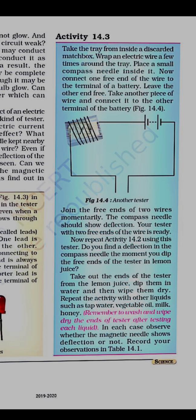The compass needle shows deflection, and your tester with two free ends of wire is ready. Now take out the ends of the wires — if you take out the tester's wire, do you find any deflection in the compass? Next, dip the tester ends in lemon juice, then in water and wipe them dry. Repeat with other liquids such as tap water, vegetable oil, milk, honey, and vinegar.